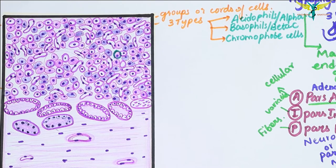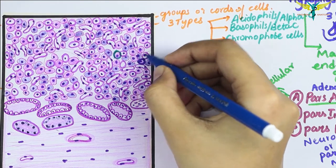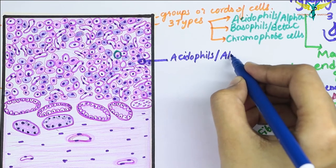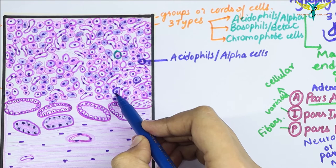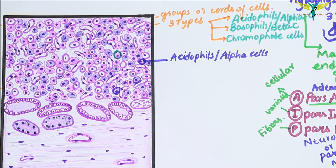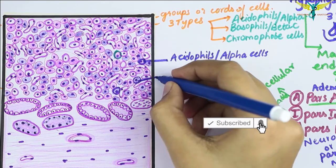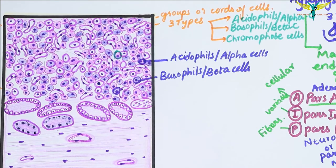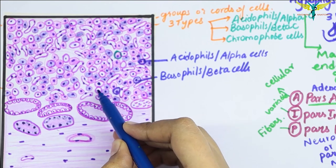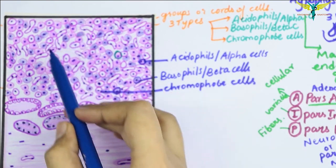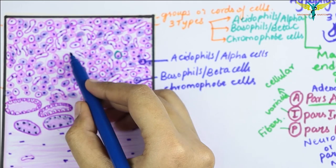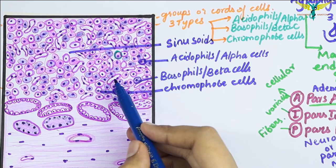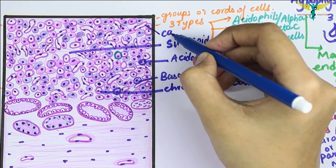In this diagram, the pink-staining cells are called acidophils or alpha cells. The cells with blue cytoplasm are called basophils or beta cells. The cells in which nuclei are present but the cytoplasm is not stained are called chromophobe cells. In between the groups of these cells, we can see the presence of numerous sinusoids or spaces, and you can note the presence of capillaries here.